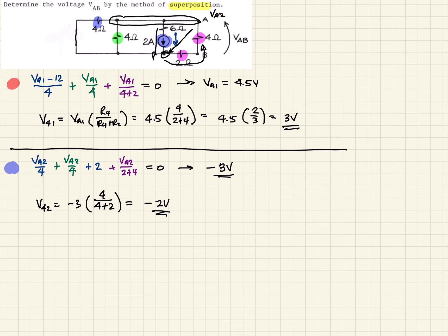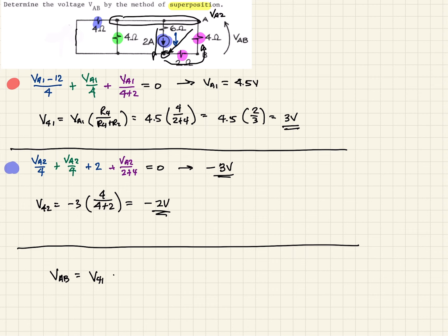That's the contribution from our second source. Using superposition, VAB equals V4 from the first source plus V4 from the second source, which is 3 plus (minus 2), giving us 1 volt. If we were to take a voltmeter and place it at A and B, we should measure 1 volt.